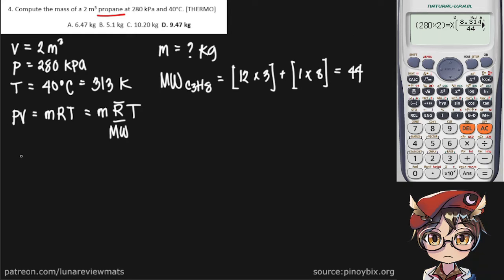Now we can simply start putting our values in. Pressure is 280, the volume is 2, the mass is what we're looking for. Then we divide the universal gas constant by the molecular weight multiplied by our temperature, absolute temperature.